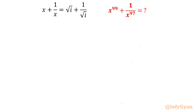Hello everyone, welcome to Infigyan. In this very exciting video on algebraic challenging equations and expressions, we will be simplifying one expression from a reciprocal equation: x plus 1 over x equals square root of i plus 1 over square root of i. We have to simplify the value of x power 99 plus 1 over x power 97.